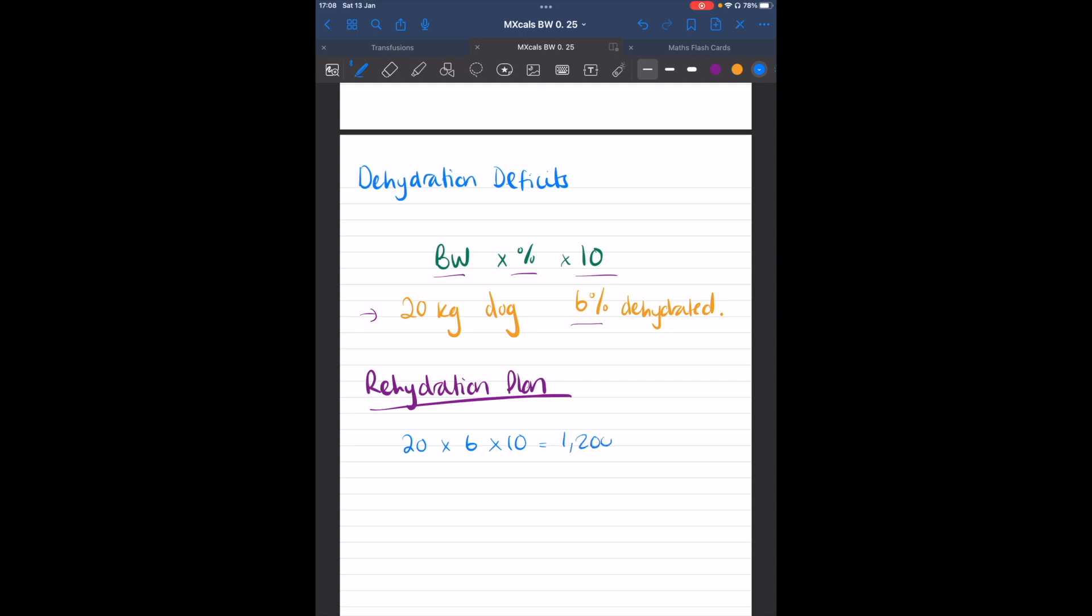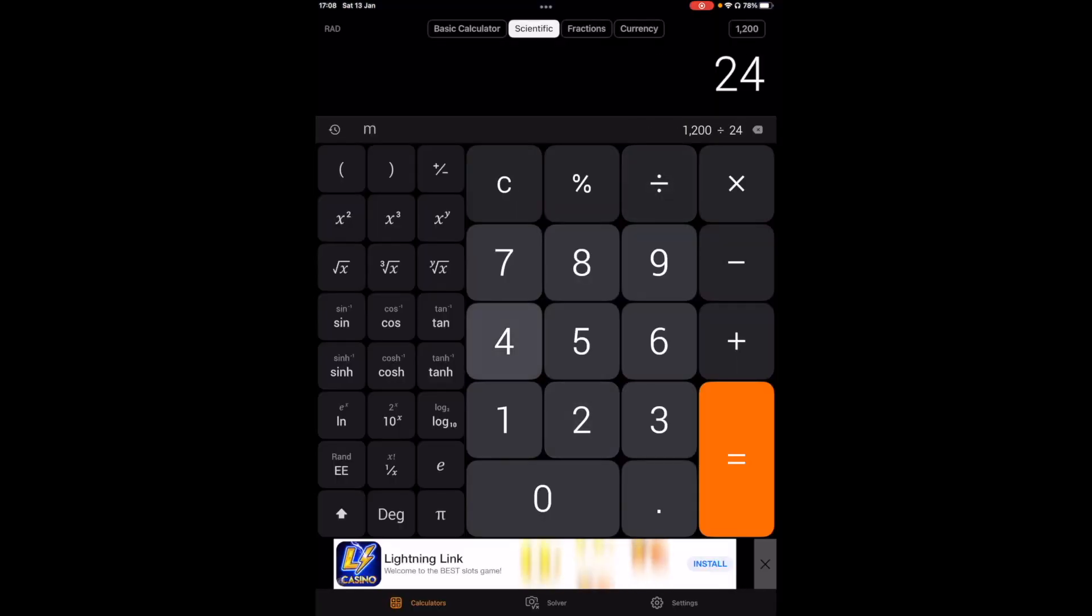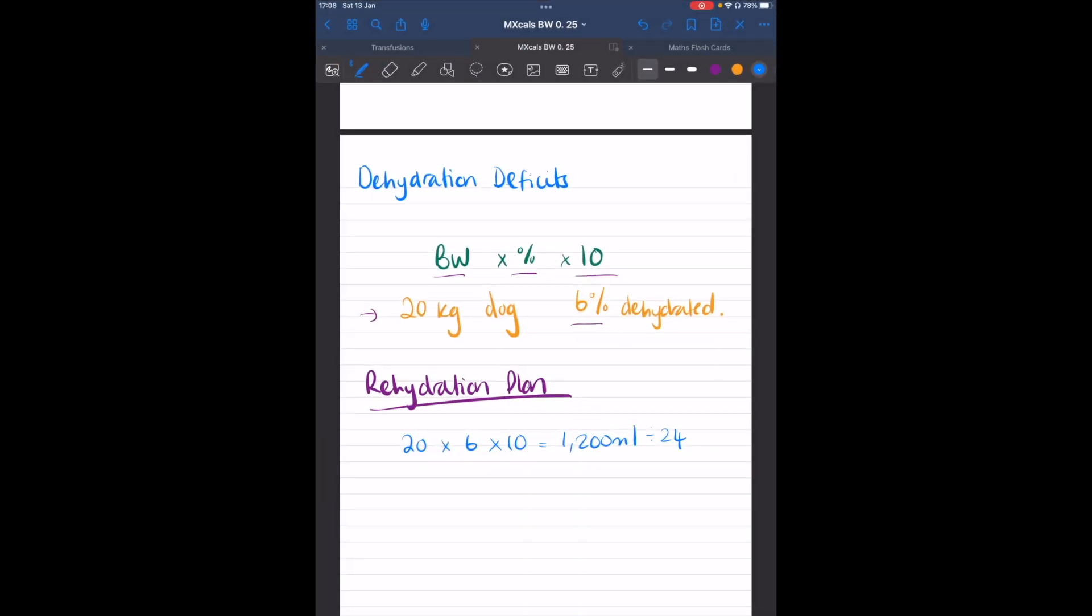So this means 20 kilograms times 6% dehydration times 10 made 1200 mls lost that needs to be replaced. Now generally we replace fluids over a 24 hour period. So we'll divide by 24. Sometimes, especially in emergency, they may choose to replace that fluid over 12 hours instead of 24, but for ease here let's just say 24. That's 50 mls an hour, which is what we would need on our machine.